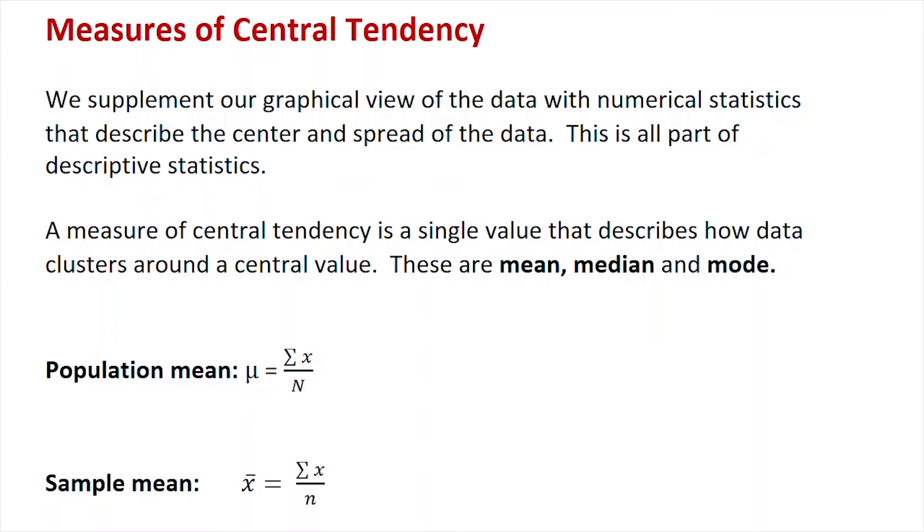We're going to start off with the population mean. That's represented by the Greek letter mu (μ), and that counts every data point in the entire population divided by capital N, the number of the whole population. We very rarely have a chance to do this. It's usually way too many and impossible to count everyone in the population.